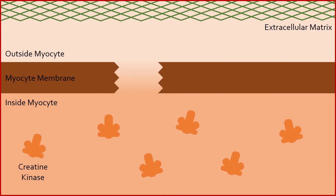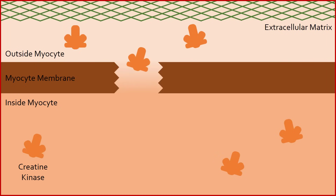Another important molecule that diffuses through the rips is creatine kinase, which leaks out of the cell and eventually into the blood. This elevated level of creatine kinase in blood is often used to diagnose DMD. Creatine kinase is an enzyme that stores energy for myocytes to use during contraction. With less creatine kinase, less energy storage occurs, which also weakens muscles.